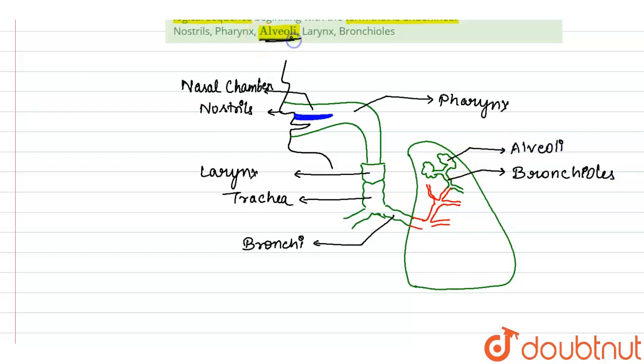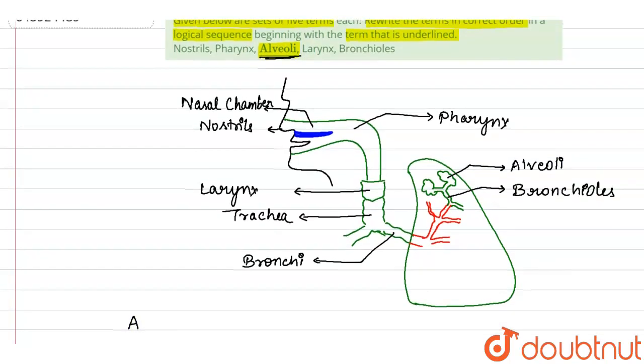Now if I have to start with alveoli, we know alveoli is the innermost or the lowermost category. So alveoli, then comes bronchioles. After bronchioles comes my larynx.